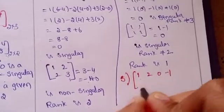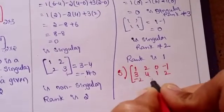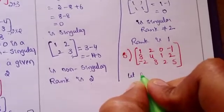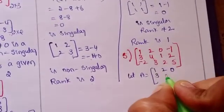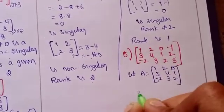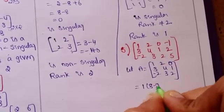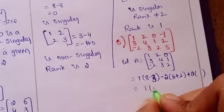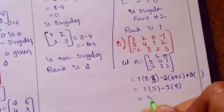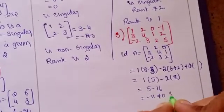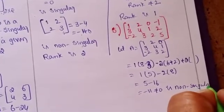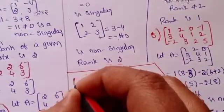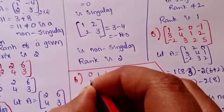For the fifth problem, the matrix is 1, 2, 0, minus 1 / 3, 4, 1, 2 / minus 2, 3, 2, 5. Removing one column, let A equal 1, 2, 0 / 3, 4, 1 / minus 2, 3, 2. The determinant gives 1 into 5 minus 2 into 8 = 5 minus 16 = minus 11, which is not equal to 0, so it is non-singular and the rank is 3.